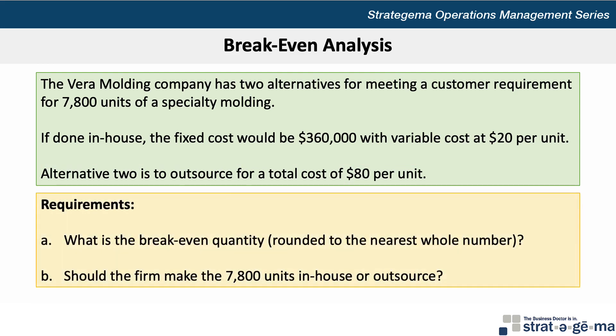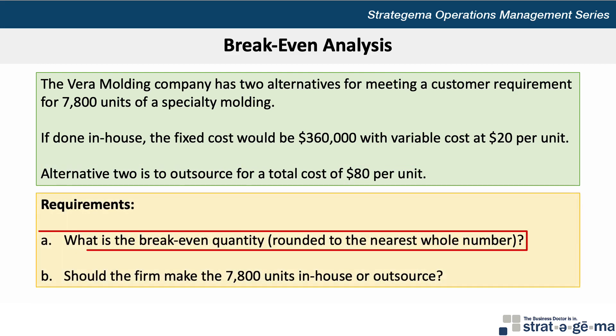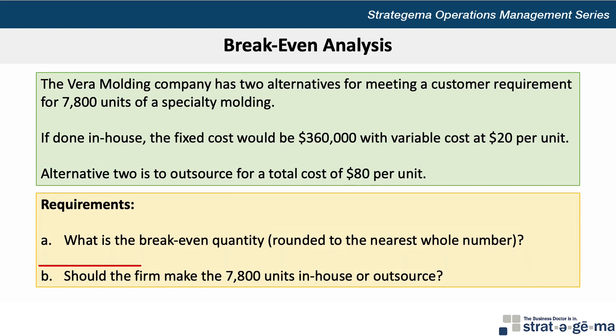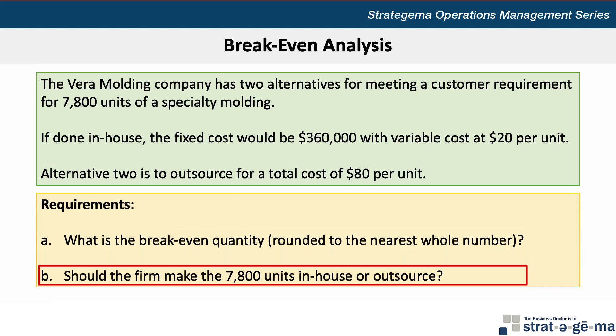There are two requirements for this problem. A: what's the break-even quantity rounded to the nearest whole number? And B: should the firm make the 7,800 units in-house or outsource?